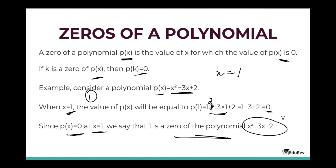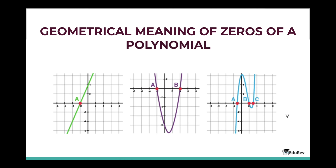So, what is a zero of a polynomial? A zero of a polynomial is any number which, when put into that polynomial, makes that polynomial zero. Now, what is the geometrical meaning of zero of a polynomial? Geometrically, zeros of a polynomial are the points where the graph cuts the x-axis.